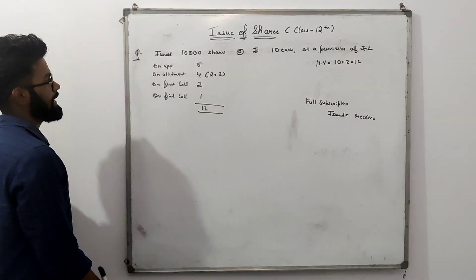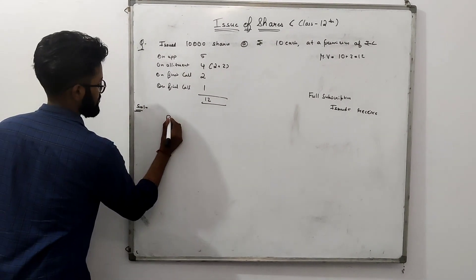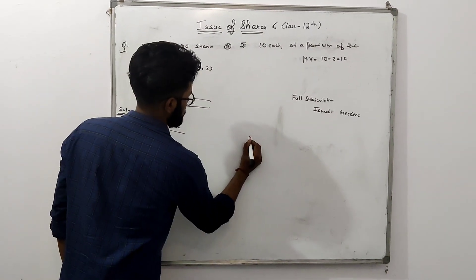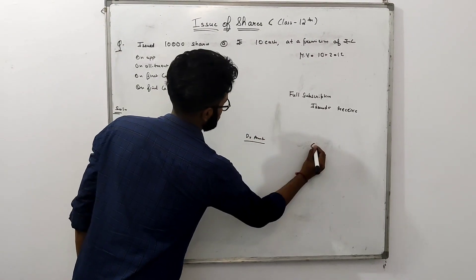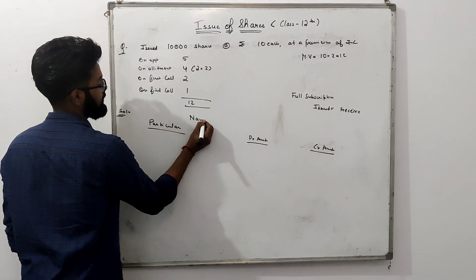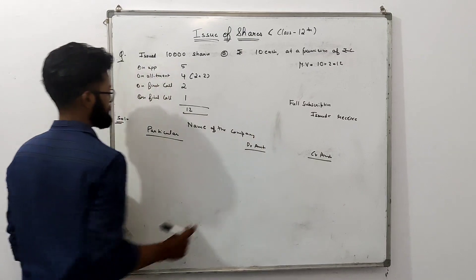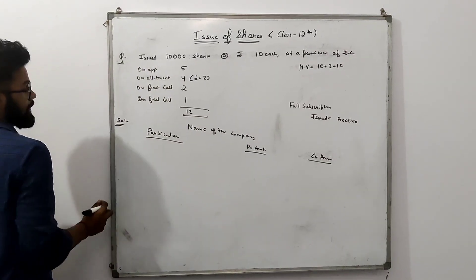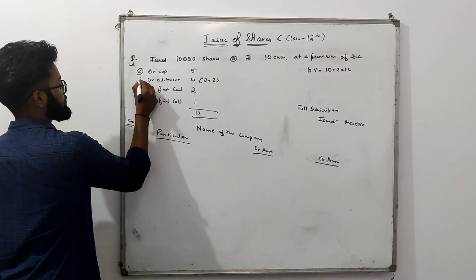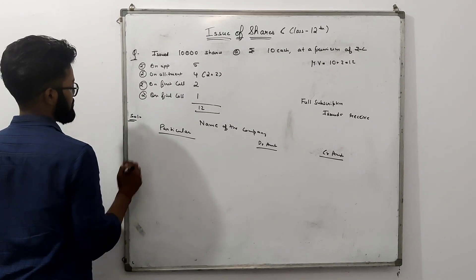We will start the solution. My format for the entry has three columns: Particular, Debit Amount, and Credit Amount. If you have the name of the company in the question, write the name of the company at the top.